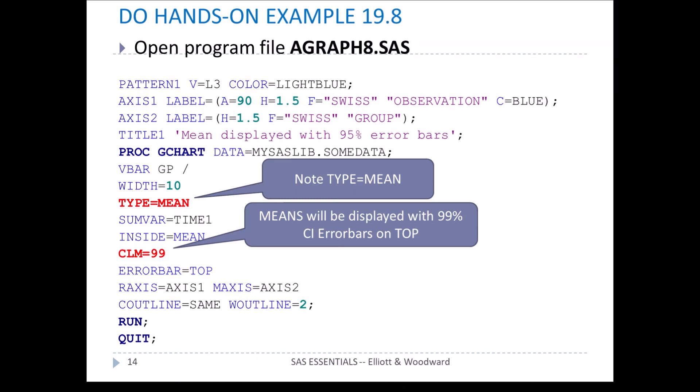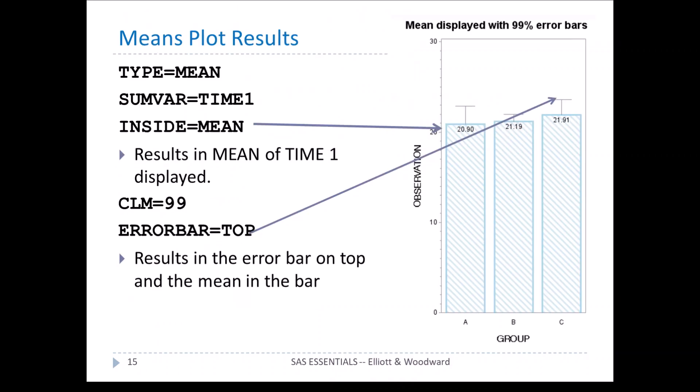Example 19.8 from the text — open up the program file agraph8.sas. I want to point out three items in red: type equal mean indicates the bars are going to be means; CLM equal 99 displays 99% confidence error bars; and error bar equal top puts the error bars on the top of each bar. Here we can see the result, with the mean displayed inside the bar — the first one is the mean of 20.9. The 99% confidence interval error bar is on top of each bar.